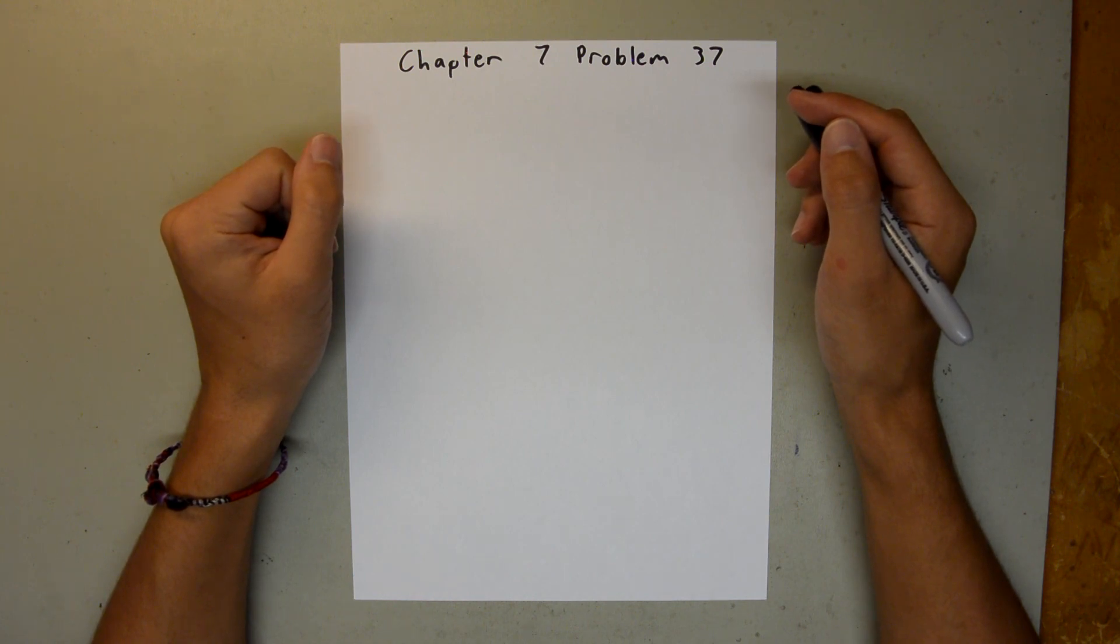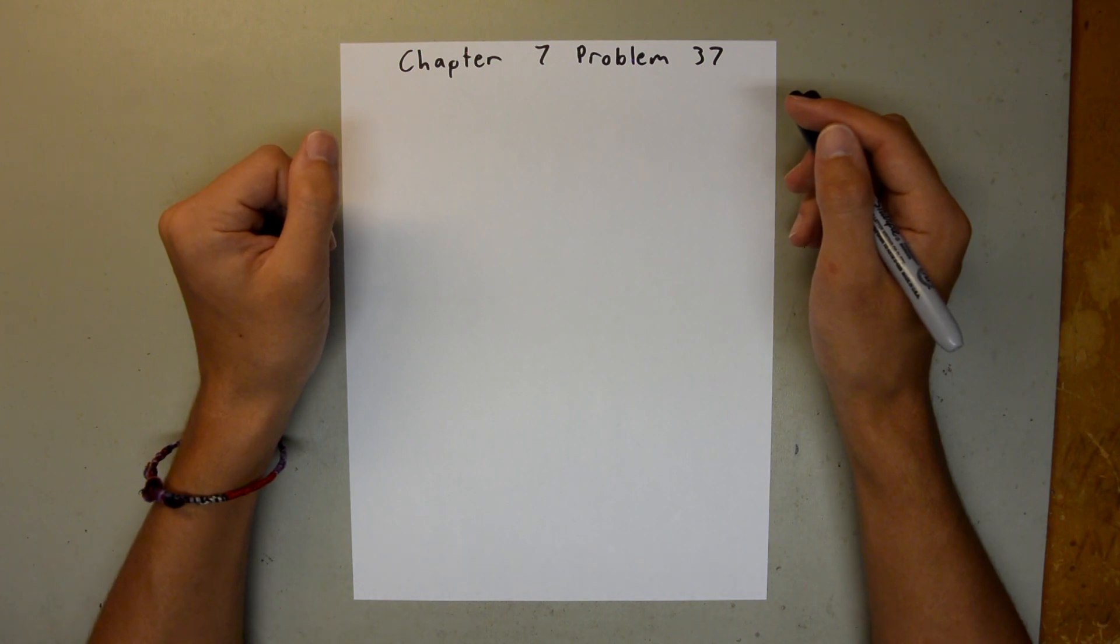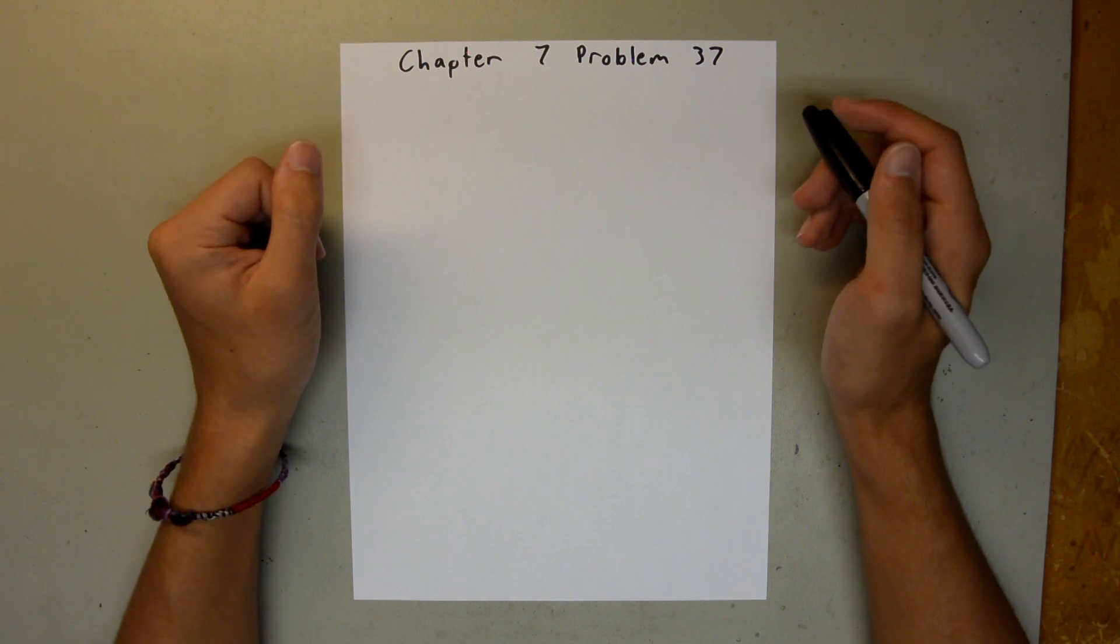Chapter 7 is all about kinetic energy and work, and in Problem 37, we are told there is a force that acts on a particle, and we are given the particle's position equation, and we are asked to find the work done on the particle in a particular time frame.